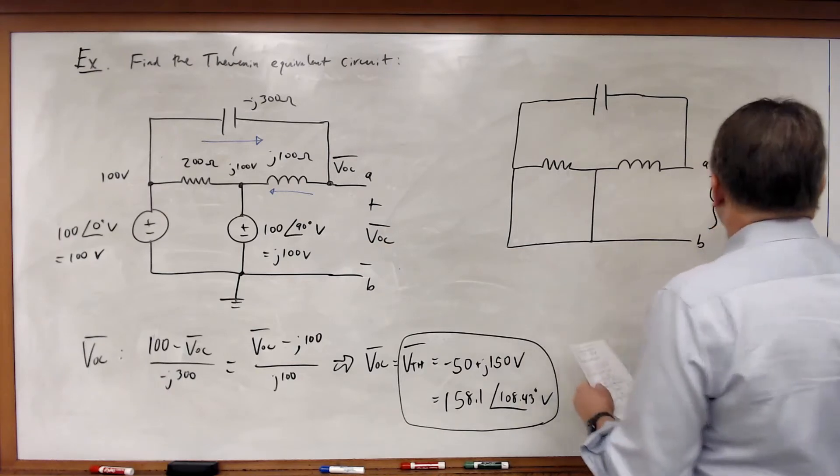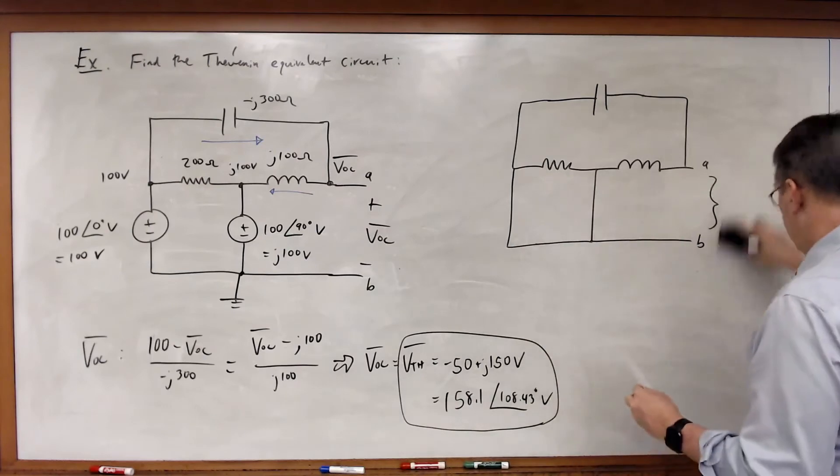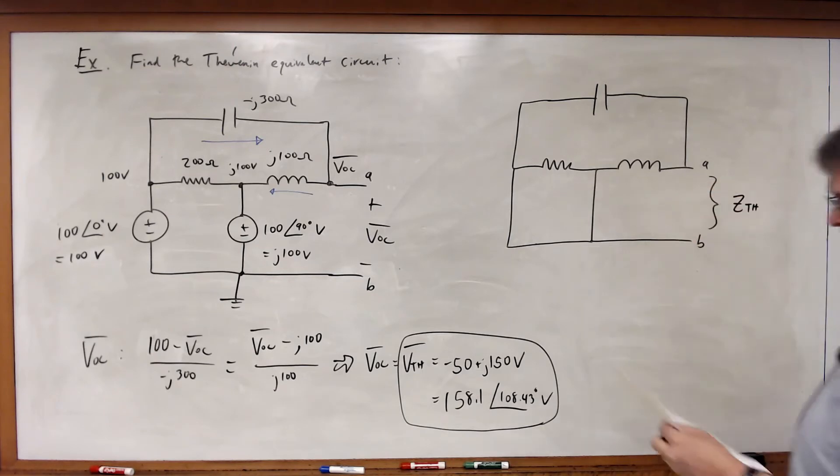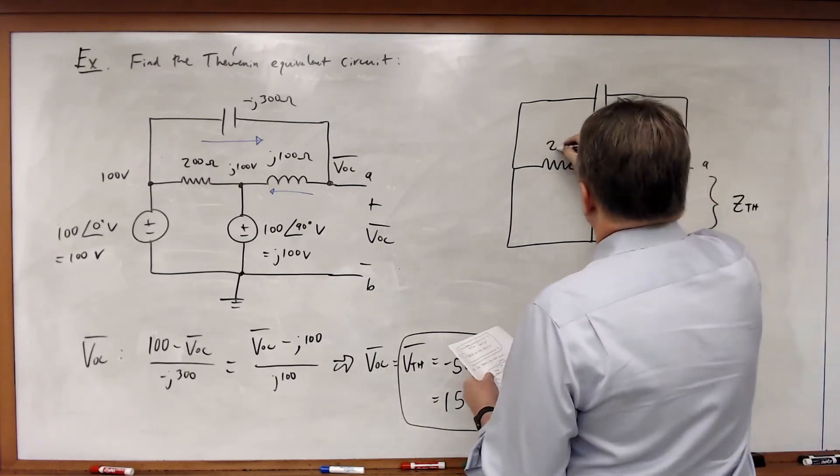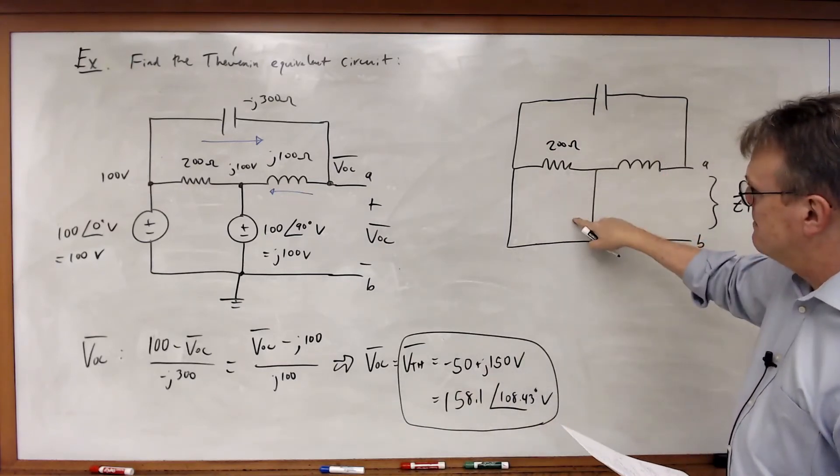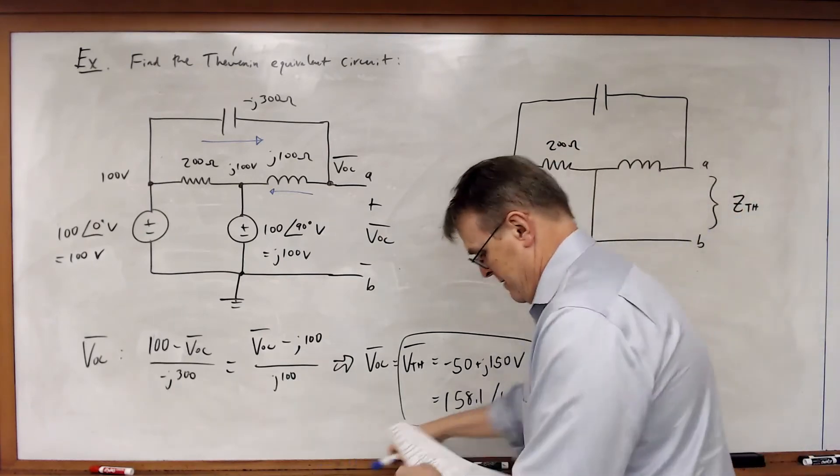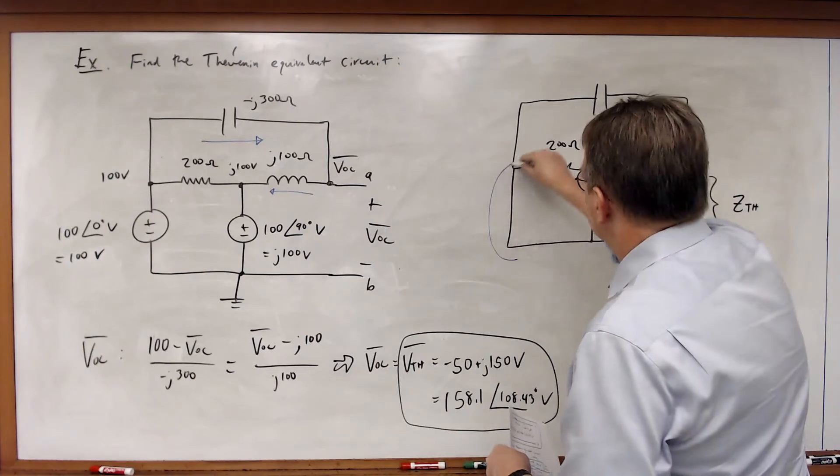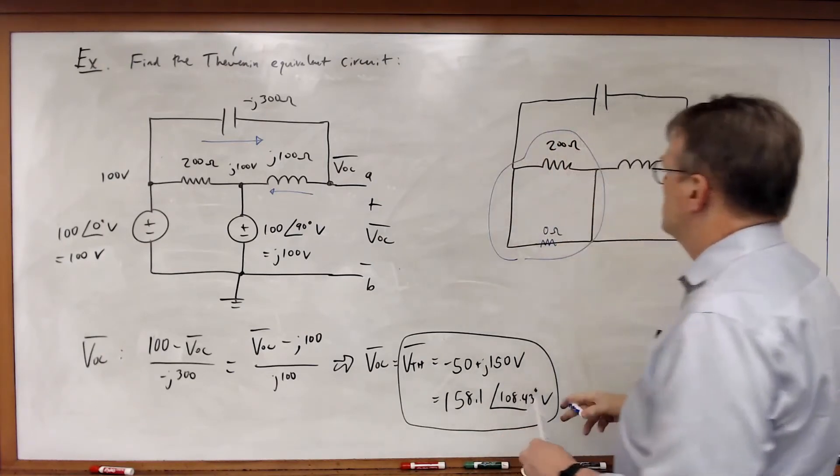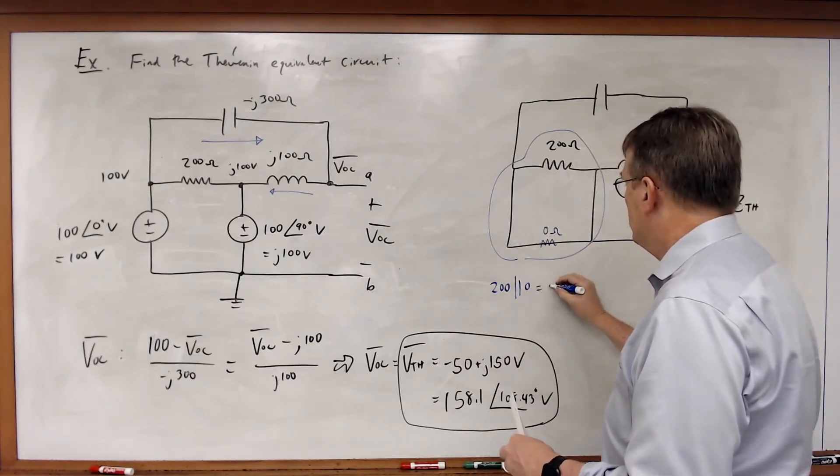I want to find the equivalent impedance between nodes A and B, which will equal the Thevenin impedance. I've got 200 ohms, but note the 200 ohms is shorted on both sides. The 200 ohm resistor is in parallel with what is effectively a zero ohm resistor, so 200 in parallel with zero equals zero ohms.